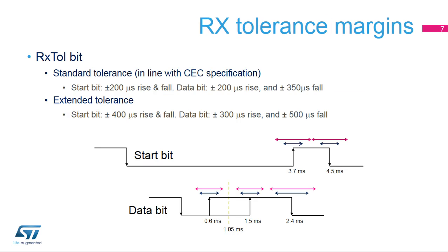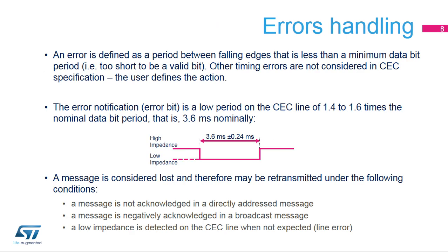The HDMI CEC controller supports two RX tolerance margin modes. First, a standard tolerance mode in line with CEC specifications: plus or minus 200 microseconds on start bit rise and fall time, plus or minus 200 microseconds on the rising edge of a data bit, and plus or minus 350 microseconds on the falling edge. The second is an extended tolerance mode, where the start bit timing is extended to plus or minus 400 microseconds for rise and fall, plus or minus 300 microseconds on the rising edge, and plus or minus 500 microseconds on the falling edge. A received data bit, excluding the start bit, is considered invalid if the period between the rising and falling edge exceeds the tolerance margins defined by the HDMI CEC specification.